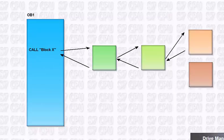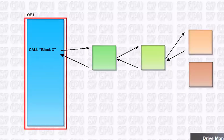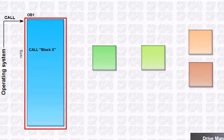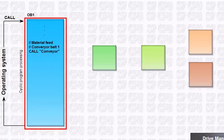As shown in the preceding section on the execution system, the organization blocks are the interface between the operating system and the user program. The main program is generally located in the cyclically called OB1. For example, OB1 calls the technological unit of the first conveyor belt.